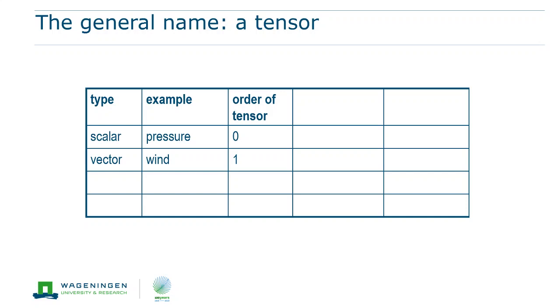What the order actually tells you is how many directions are involved in the tensor. For a scalar, there is no direction involved. The thing only has a value. And for a vector, the number of directions is just 1, the direction of the vector. Later on we will see that there are also tensors where more than one direction is relevant.